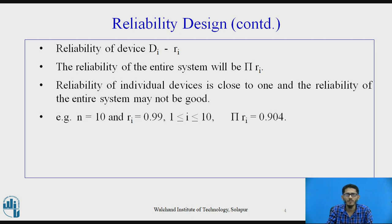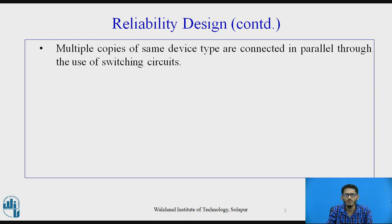For example, if we take n equal to 10, meaning 10 devices, and ri equal to 0.99 for i ranging from 1 to 10, then the product of all ri's would be equal to 0.904 — that is the reliability of the entire system.